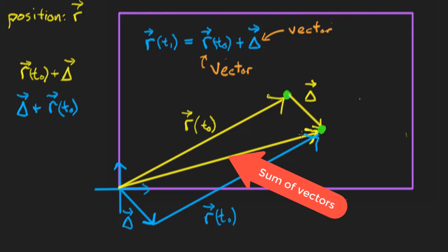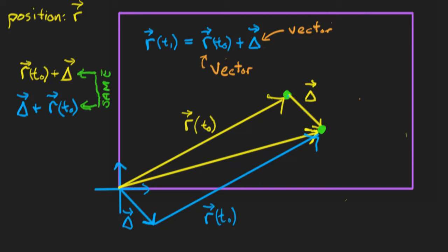This tells us that vector addition, interpreted as arranging vectors tip to tail, has the property that the order of addition doesn't matter — just like normal addition with scalar numbers, where 3 plus 2 equals 2 plus 3. In this case, R plus Delta is the same as Delta plus R. Vector addition is commutative.